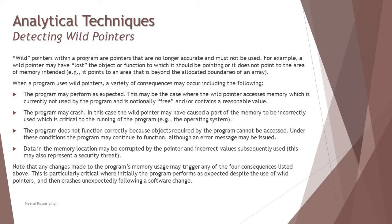A wild pointer is one that is no longer accurate or must not be used. For example, you may use a pointer pointing to a particular object on page one of an application where the user enters certain data. But when you move to module 2, 3, or 4, this pointer or object information is no longer required. At that point, this pointer is not pointing to any object on the page and may not be needed, yet it is still occupying memory, which can be harmful in terms of degrading performance.